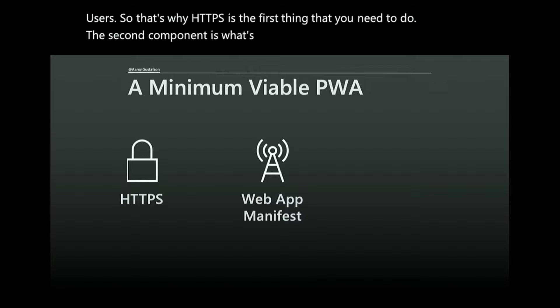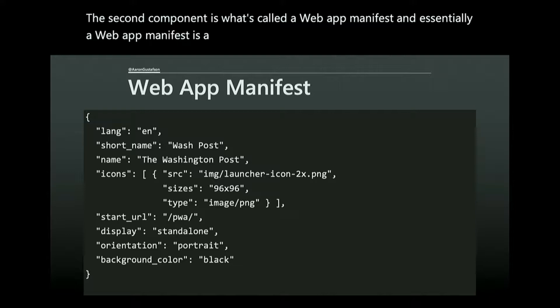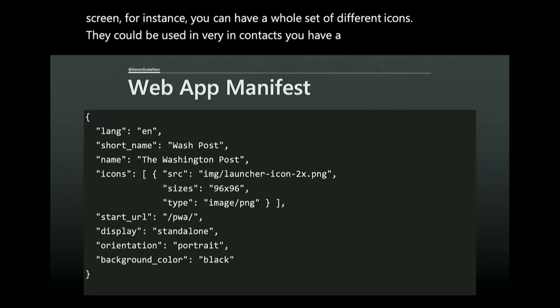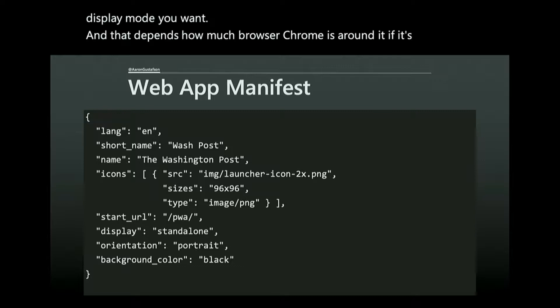The second component is what's called a web app manifest — essentially a JSON file that includes metadata about your site or application. This excerpt from the Washington Post's web app manifest includes the name, short name for limited display space like a home screen, a set of icons for varying contexts, a start URL, and a display mode that defines how much browser chrome is shown when installed.